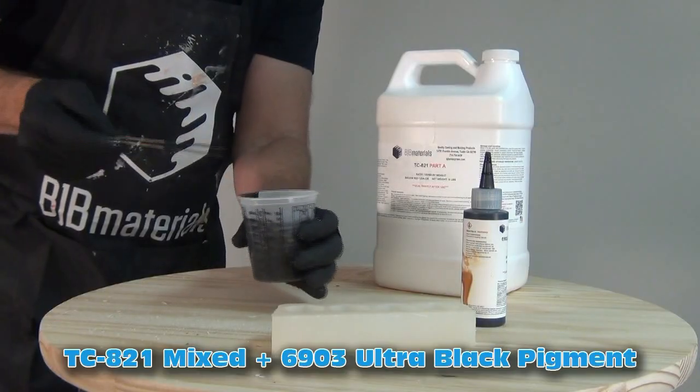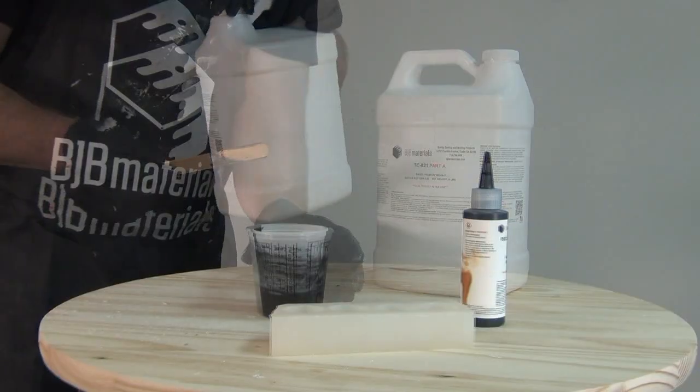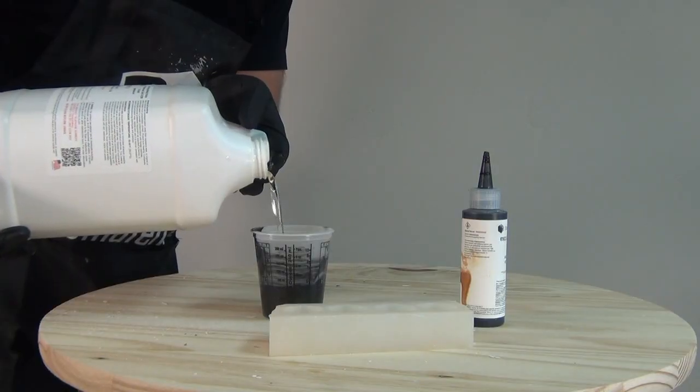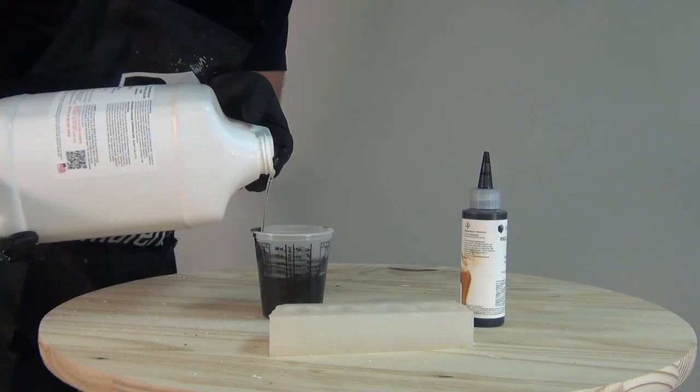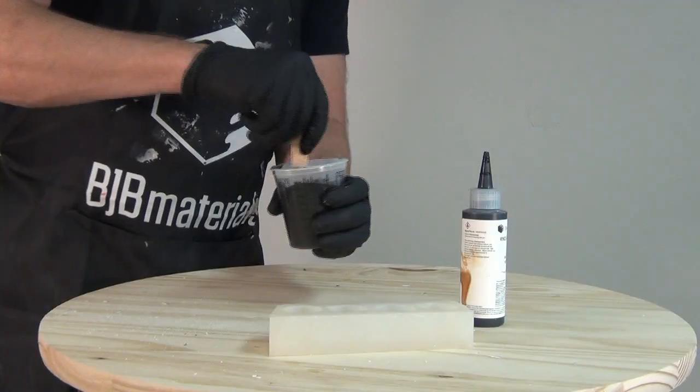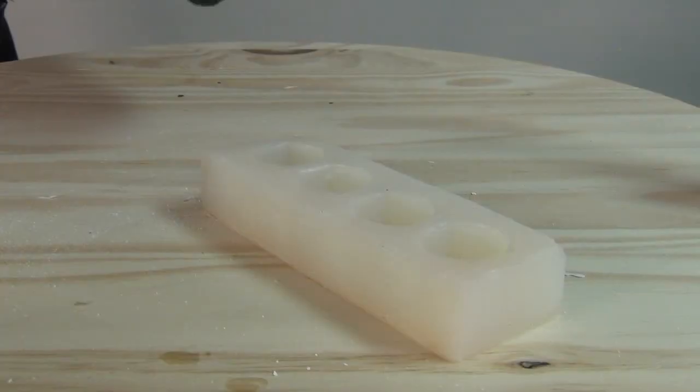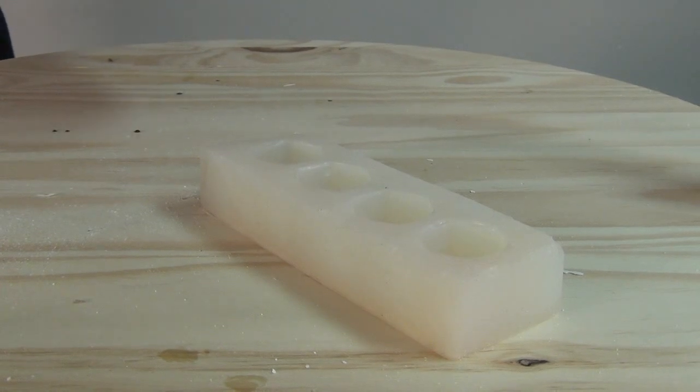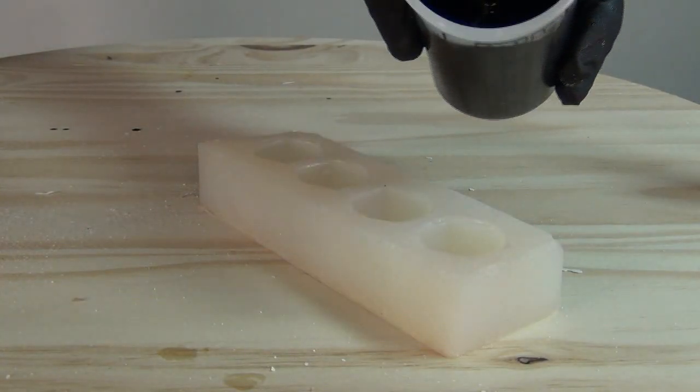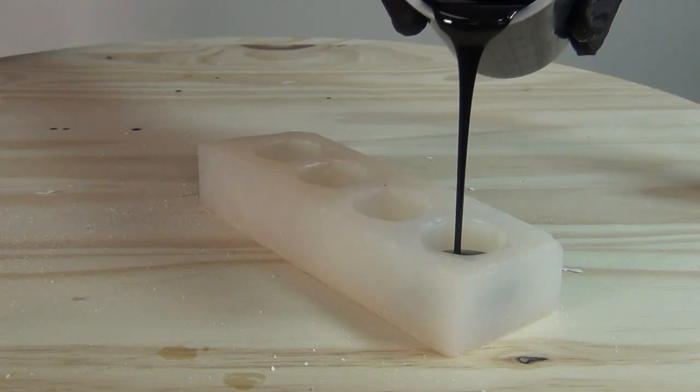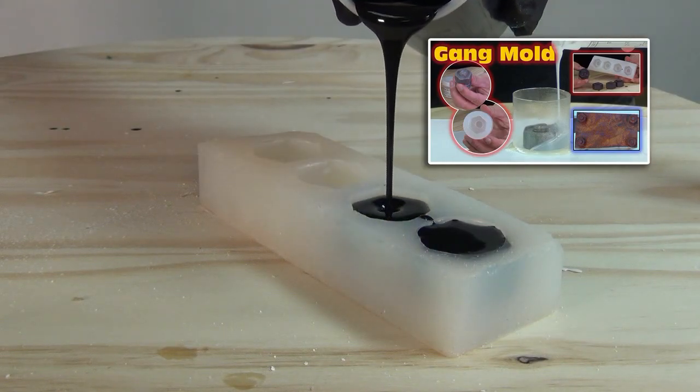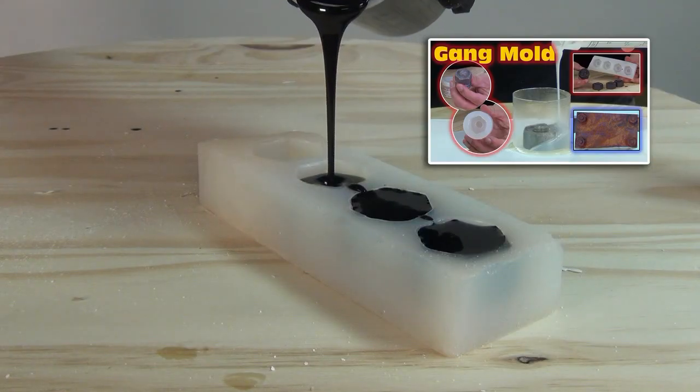Once I've got the pigment mixed into the part B, I'm ready to add the part A. This is a one to one mix ratio by volume. There is a weight ratio I'll show later in the video, but for this application, most of the things that many of you are going to do with this resin, the one to one volume ratio is fine. Now what I'm going to do is pour up into a gang mold. This is one of those things I made in a previous video, the gang mold of these little bolts. This is another tutorial I will link on the end screen.